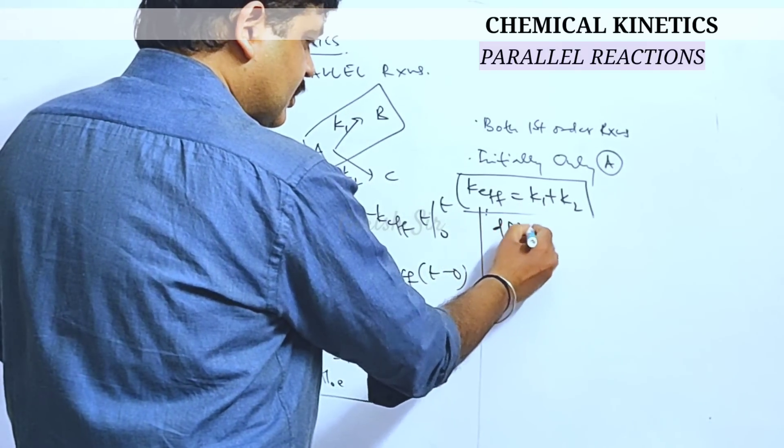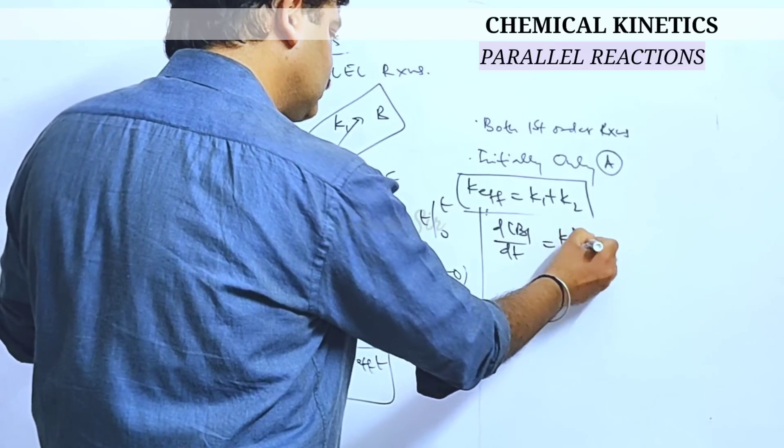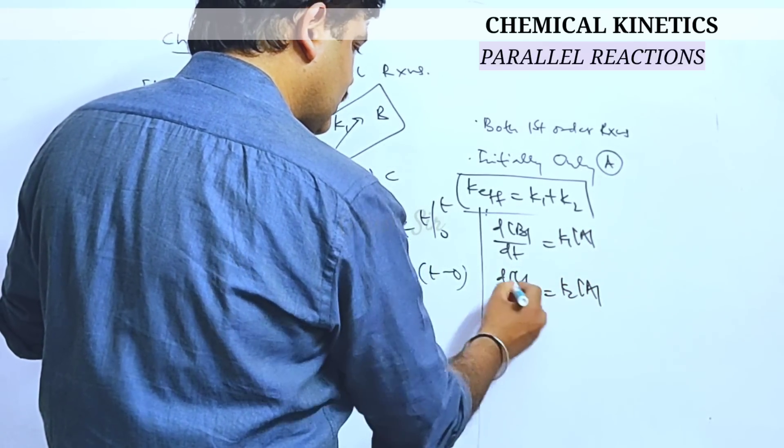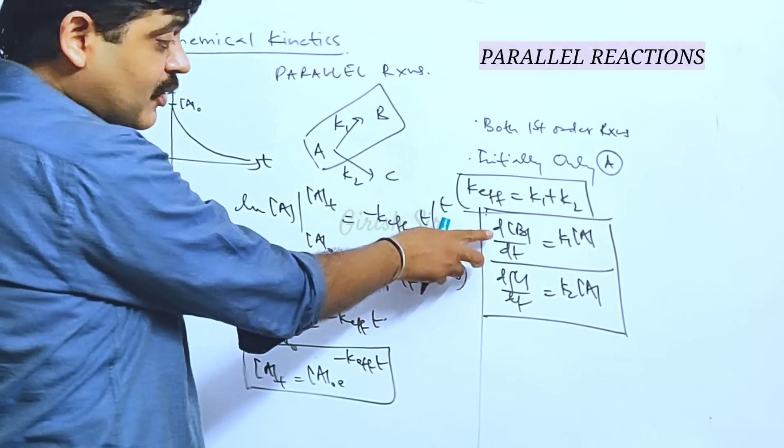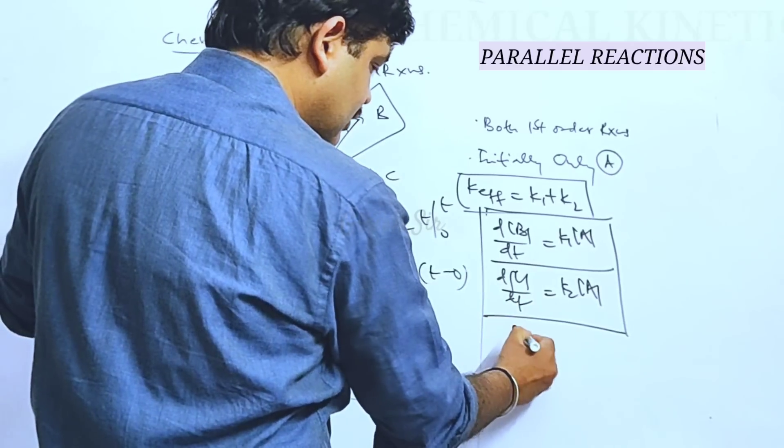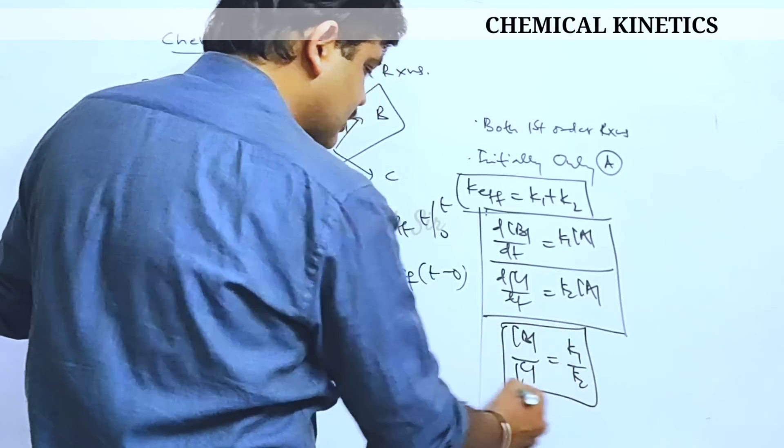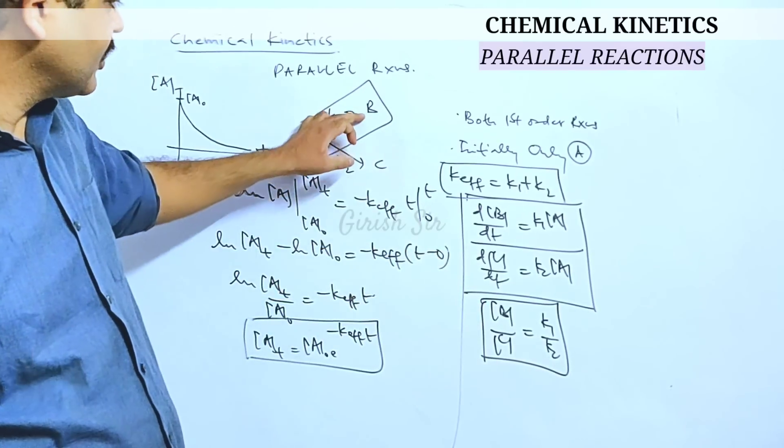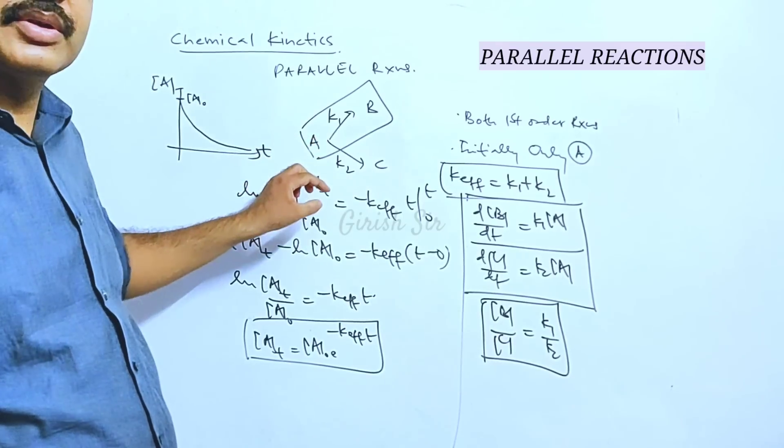Now from the previous equations, if we got these relations, there is an initial set of equations. Now if we divide these two and integrate, we will be able to get this important relation, which says that concentration of the two products, B and C are in the ratio of their respective rate constants, K1 and K2.